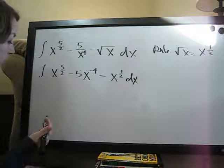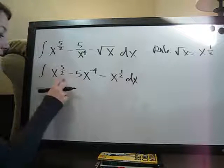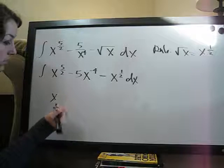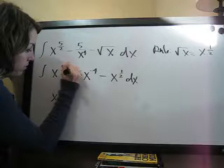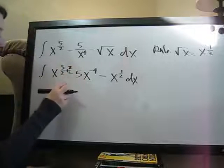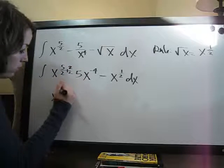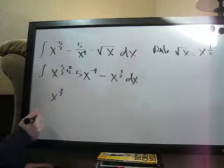So, now we can take the integral. x to the 5 halves, we of course need to add 1. So we're going to say plus 2 over 2 on the exponent is of course 7 halves.